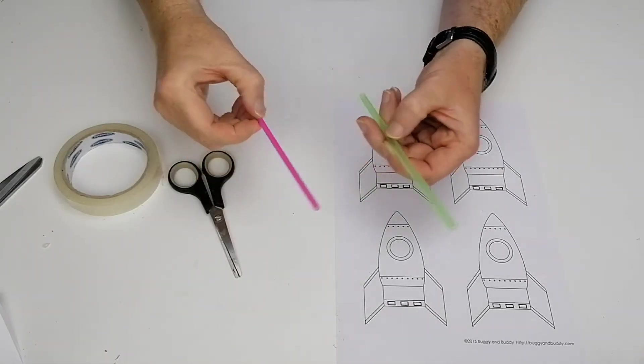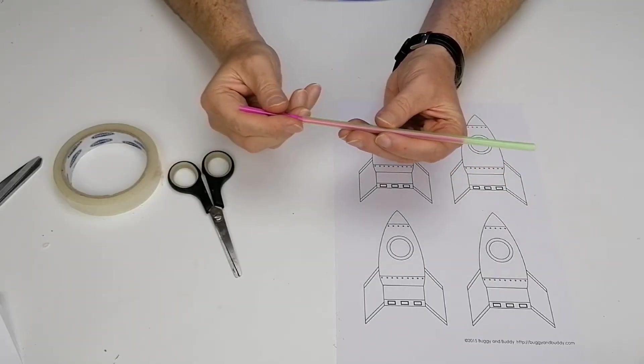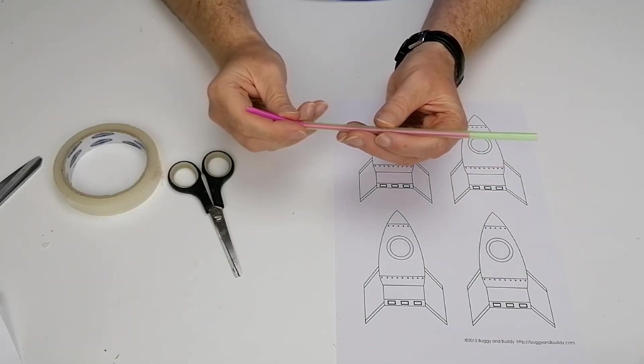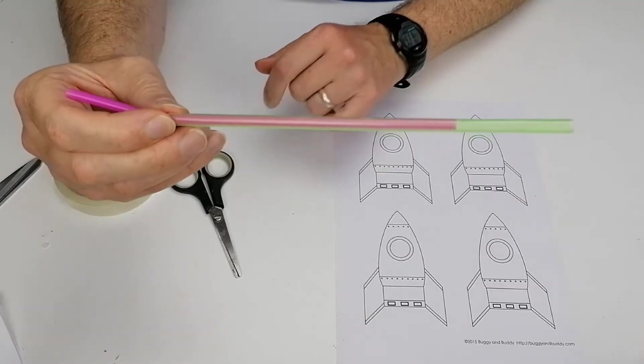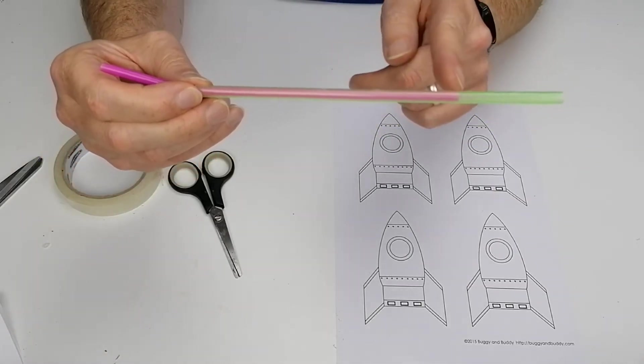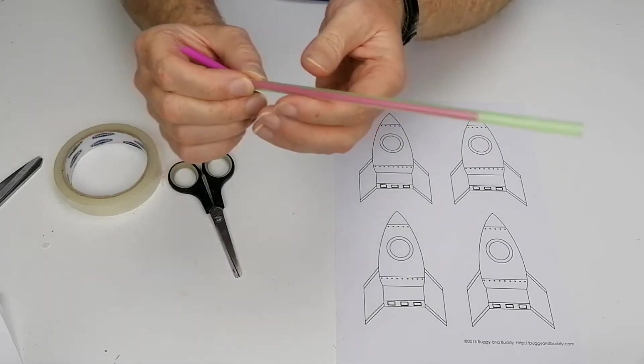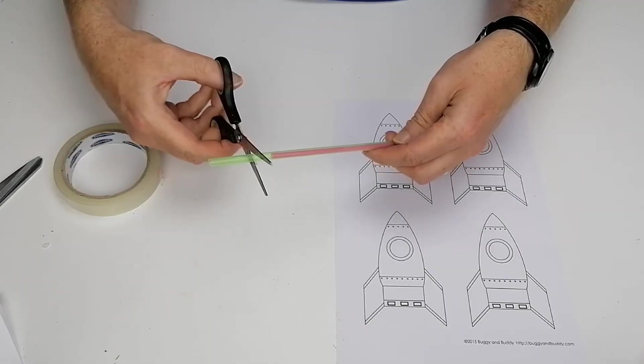The first thing we're going to do is measure up the two straws. So place the smaller straw inside, or the thinner straw inside the bigger straw. And then, as you can see there, there's this extra piece of straw which isn't necessary. Now, don't cut it exactly at the point where the smaller straw comes up to. Just go a little bit past that, and then cut it.